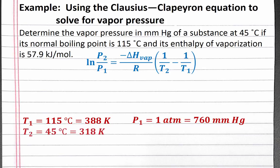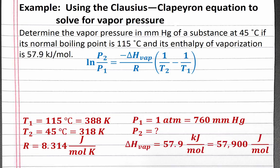Temperature 2 is 45 degrees Celsius, which is 318 Kelvin. We want to solve for vapor pressure 2. R is our ideal gas law constant. We use 8.314 joules per mole Kelvin. For our enthalpy of vaporization, we need to convert the units to joules per mole to match the units in our ideal gas law constant. So our enthalpy of vaporization is 57,900 joules per mole.